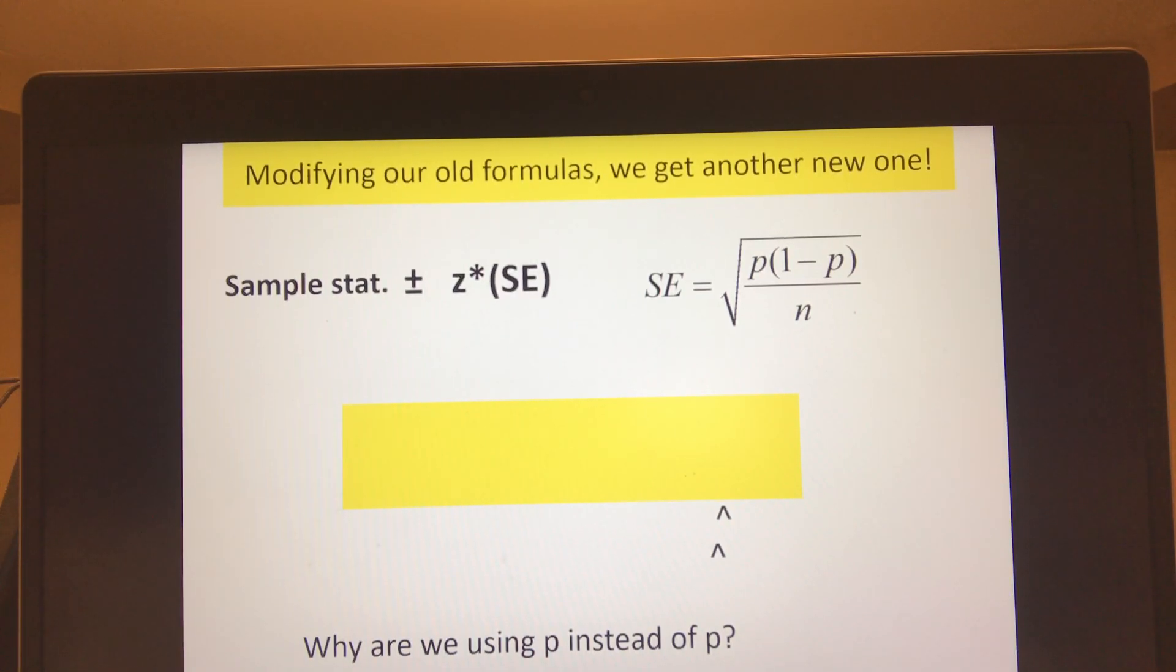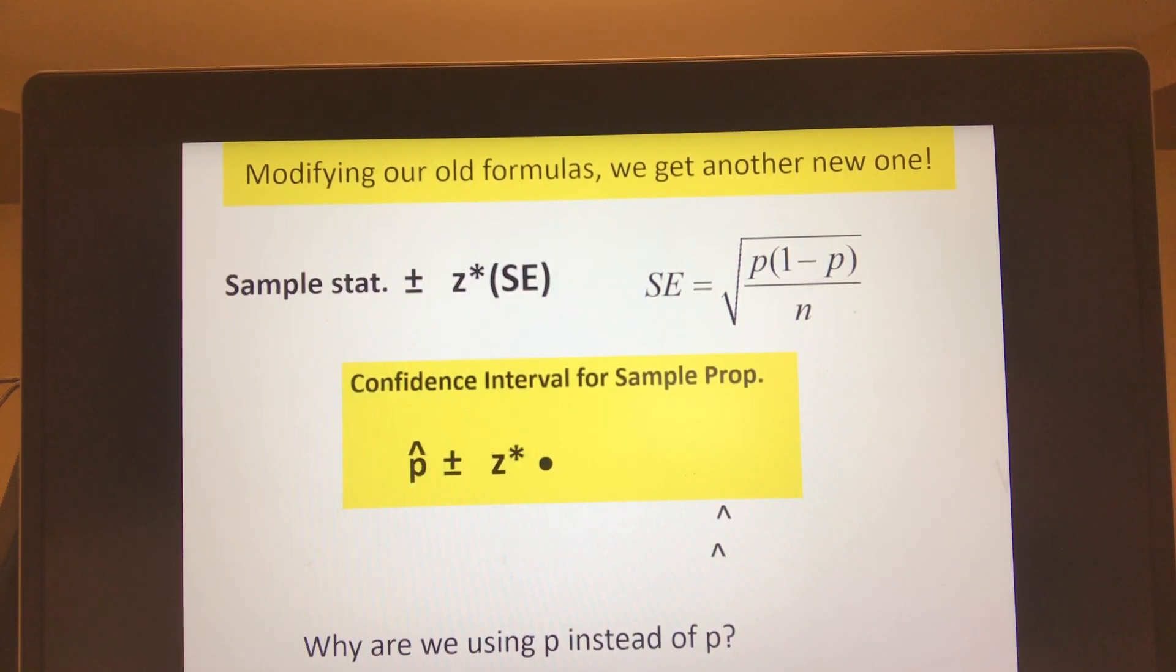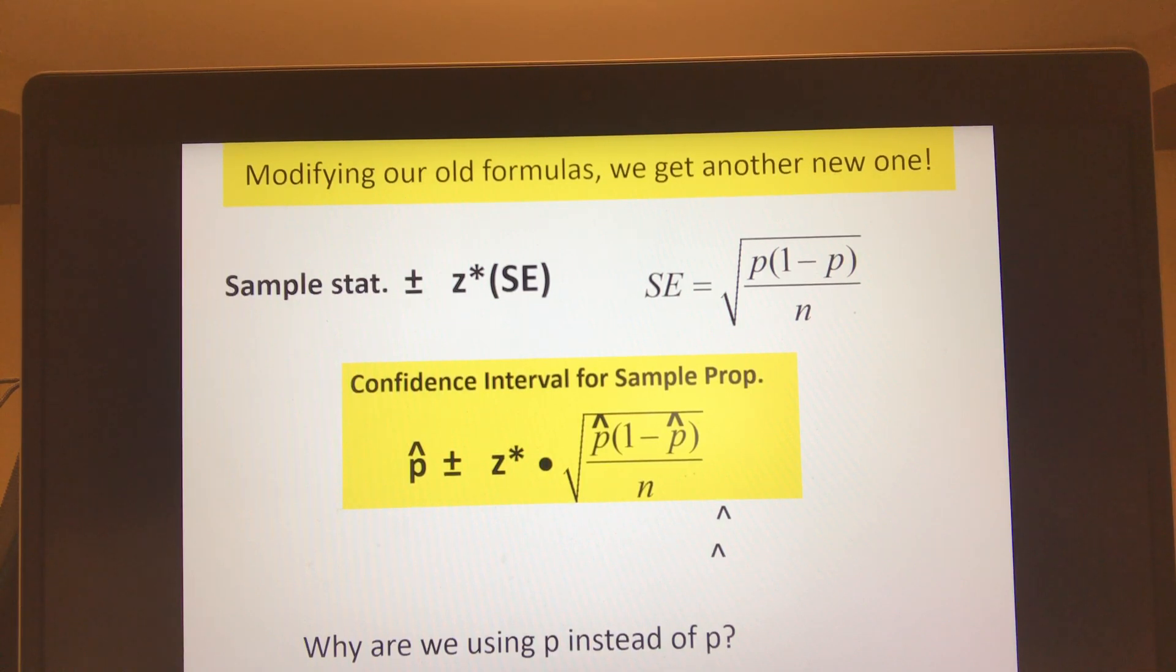Alright, so I just want to give you another warm-up question here on Thursday. This is information you should already know - how to find confidence intervals for sample proportions based on a sample size, based on the individual sample you've collected, and based on how confident you want to be using a z-star value. Hopefully you're comfortable with that.